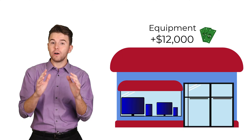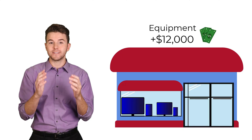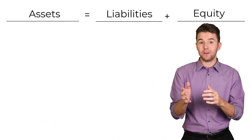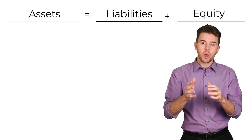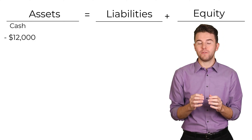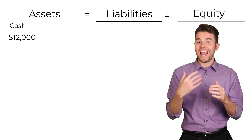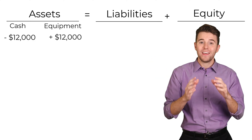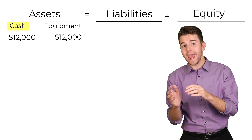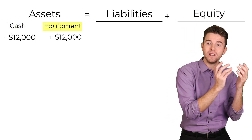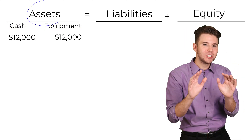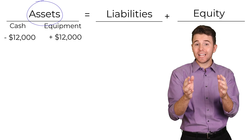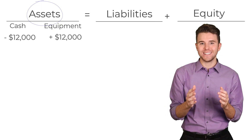After that, the business needs equipment. So the business purchases equipment for $12,000 cash. Using the accounting equation, we decrease cash by $12,000 and increase equipment by $12,000. This is an exchange of one asset for another, and does not change the dollar amount of total assets.